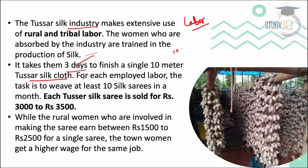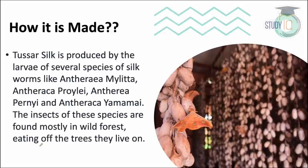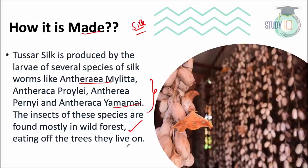To produce 10 meters of cloth, at least 10 laborers are needed, and the price is around 3,000 to 3,500 rupees. Rural women are heavily involved in this silk production, earning around 1,500 to 2,500 rupees per piece. Different silkworm species used include Antheraea mylitta, Antheraea proylei, Antheraea pernyi, and Yamamai.